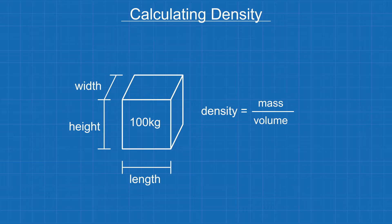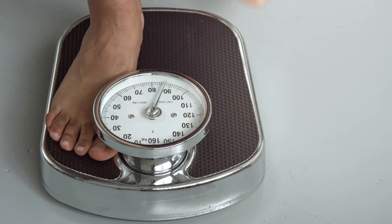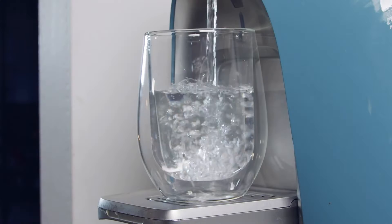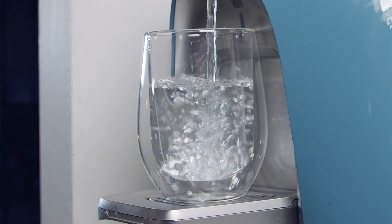You calculate density by dividing an object's mass by its volume. You can think of the mass as the weight of the object, and the volume as the space the object takes up.